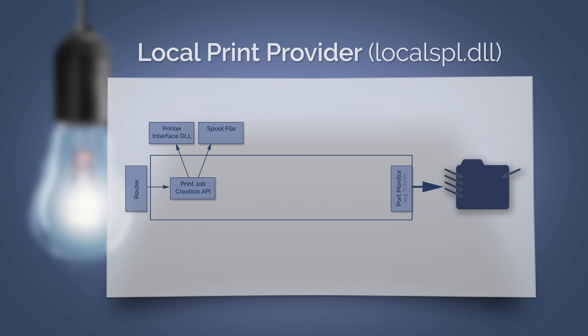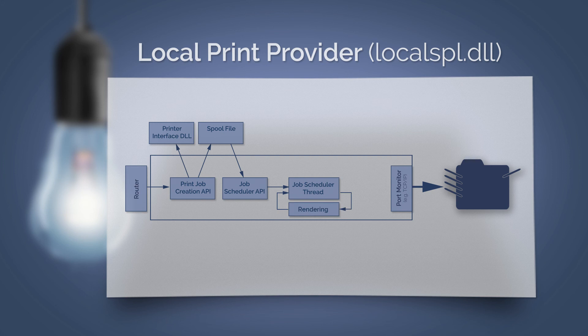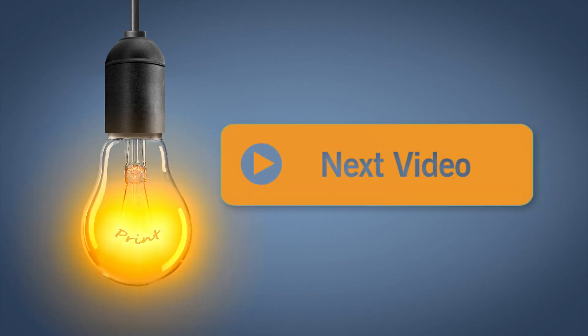Then the job scheduler API takes over. This is only there to notify the job scheduler thread that there is a new spool file and it should continue to process it. The job scheduler thread is critical — it must determine whether the spool file is in a format that can be processed directly by the printer. If it isn't, then rendering should start. The rendered spool file is then passed from the job scheduler thread to the port monitor, which passes the print job directly to the printer. This is the printing process with the local print provider, but there is also the network print provider. To find out more about that, take a look at our next video.